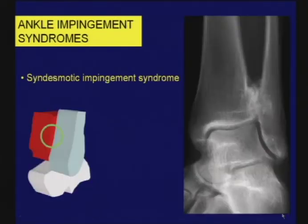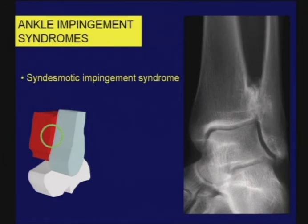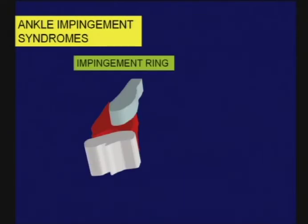The final pattern of impingement, emphasized in a few cases, relates to the syndesmotic segment of the joint. This can represent scar tissue or synovial proliferation extending up into the synovial recess. It can also be osseous in nature — following an injury, one can see cases where there is extensive bone proliferation and a pseudo-articulation between the tibia and fibula.